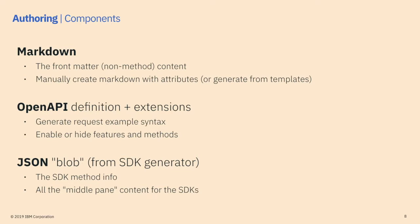We use the OpenAPI definition with extensions, create example files, and can define what's going to be hidden or exposed. The new piece is a JSON blob that's part of the SDK generator — that's the extra custom documentation per language. This lets us switch between languages showing different requests and different examples, and we also change the middle panel of the API documentation based on the selected language to switch in SDK-specific information with parameters specific to those languages.